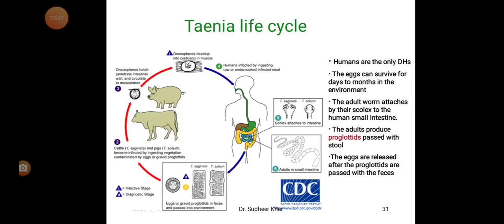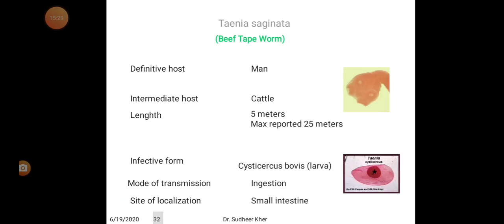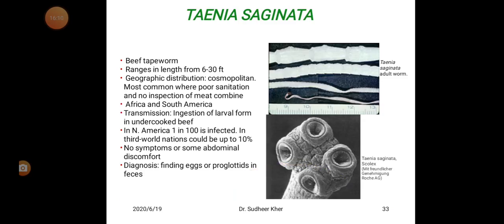Next, coming to the Taenia life cycle. Taenia solium is also called the pig tapeworm. Taenia saginata is also called the beef tapeworm. For Taenia saginata, the intermediate host is cattle and the definitive host is man. The length of the worm is 5 meters, up to a maximum of 25 meters. The infective form is cysticercus bovis, the larval form. Mode of transmission is ingestion of undercooked beef containing the larval form called cysticercus bovis. Site of localization is the small intestine.